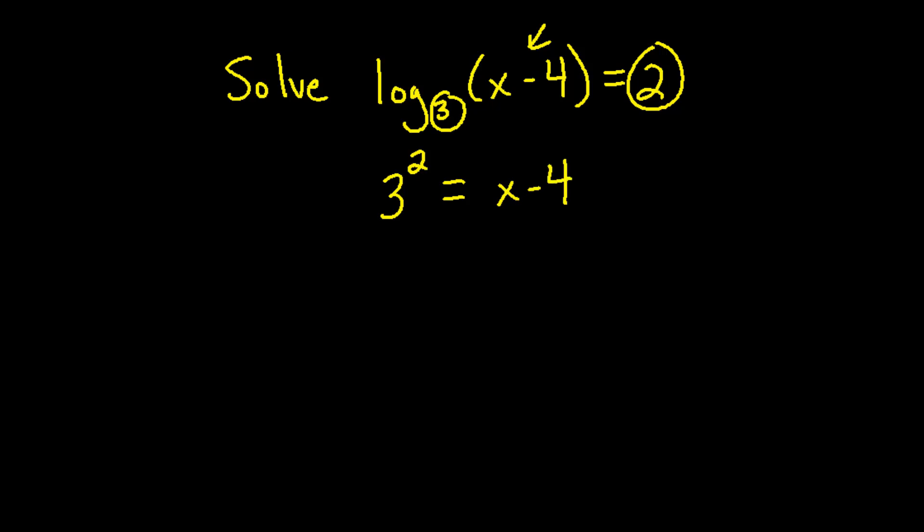This makes for an easy problem to solve. 3 squared is 9 and adding 4 to both those sides we get x equals 13.